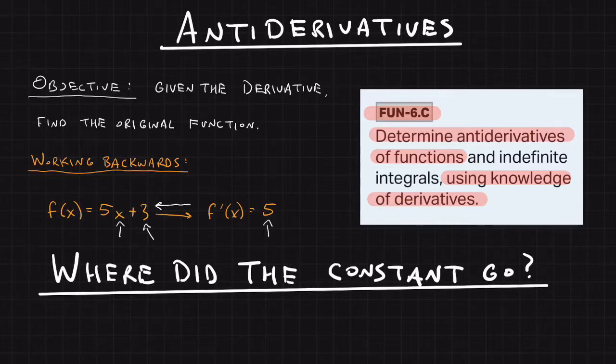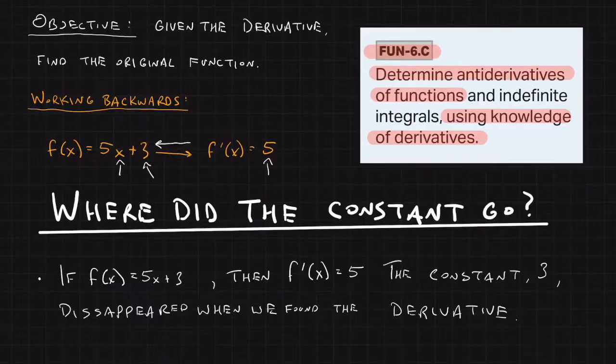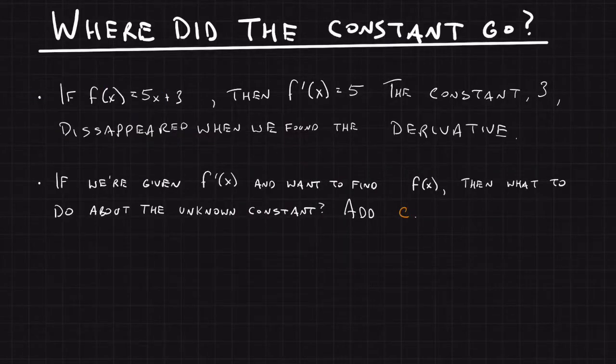When we find the antiderivative, we have to put that constant back in. For f(x) = 5x + 3, the derivative was 5. That constant, 3, disappeared when we found the derivative. If we're given f'(x) and want to find f(x), then what do we do about that unknown constant?